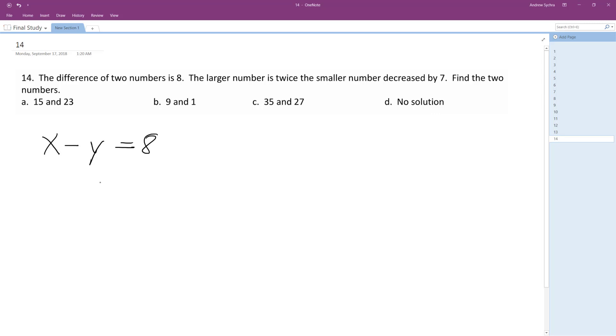And the larger number is twice the smaller number, so x is equal to, we'll make x, well x is the larger number, is equal to twice the smaller number decreased by 7.